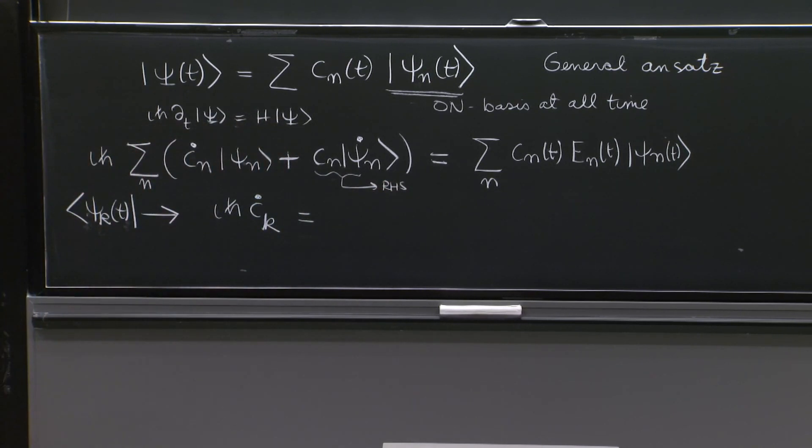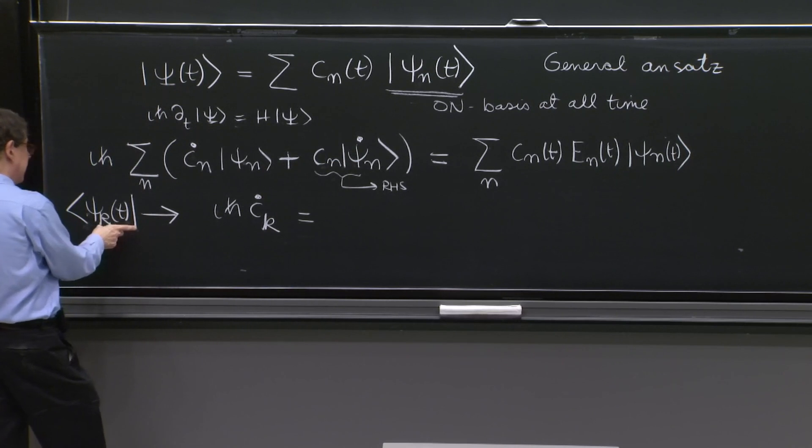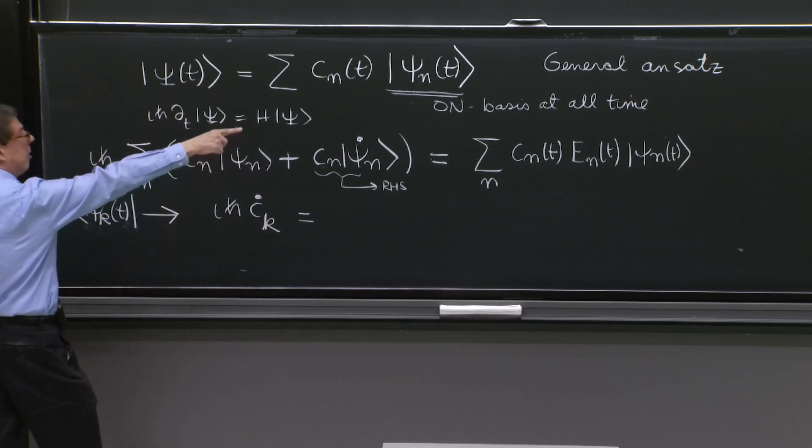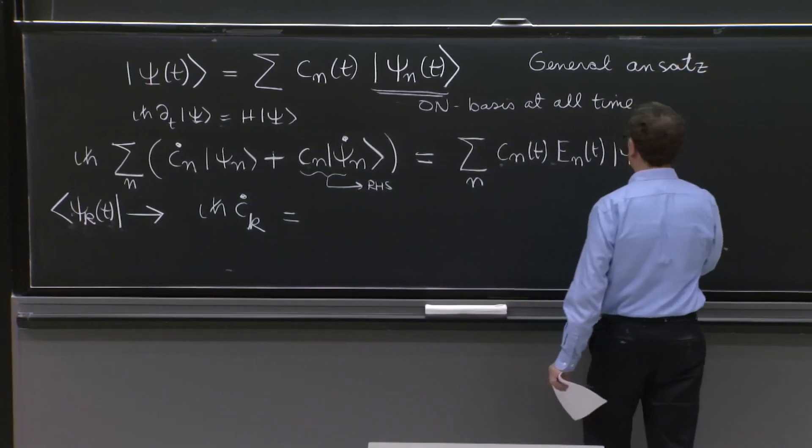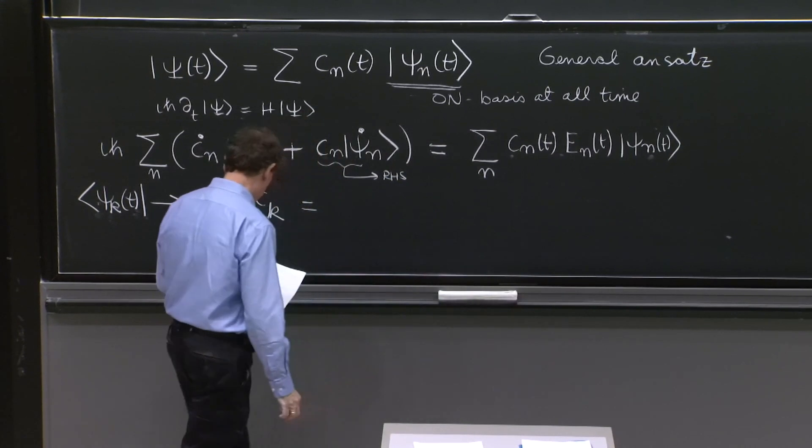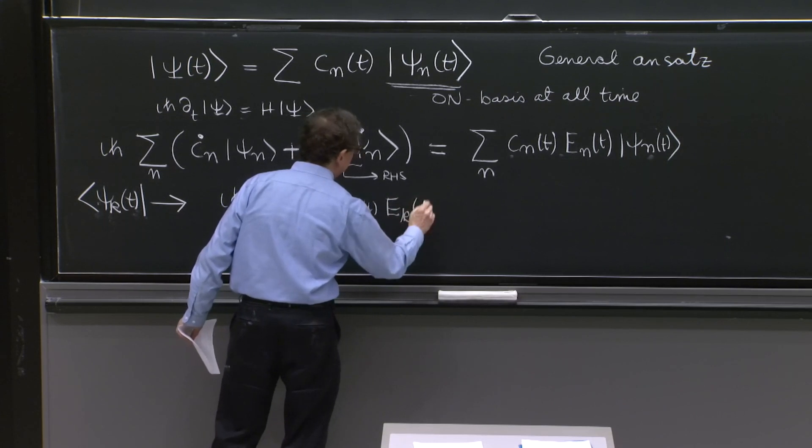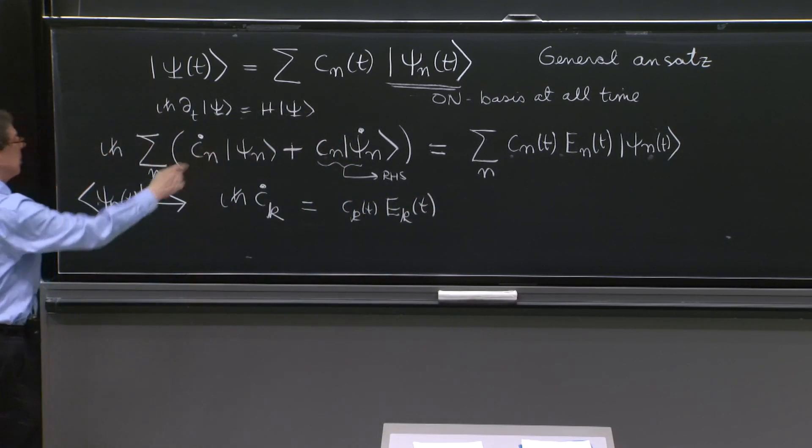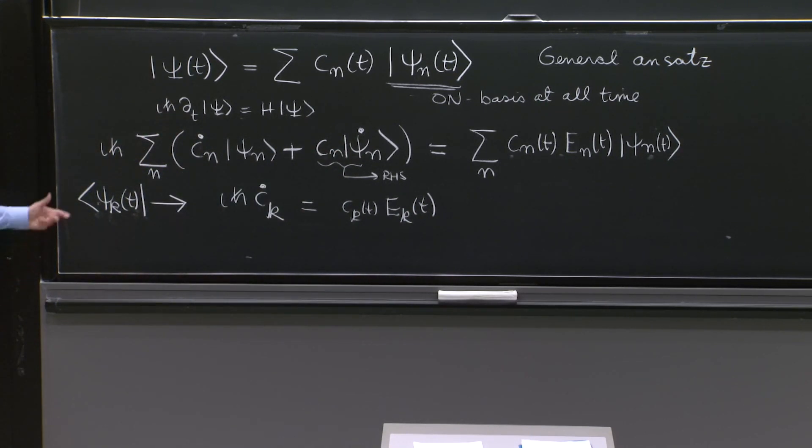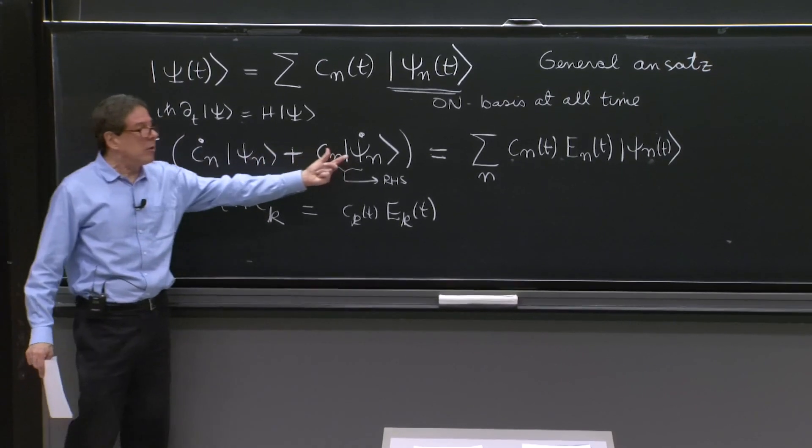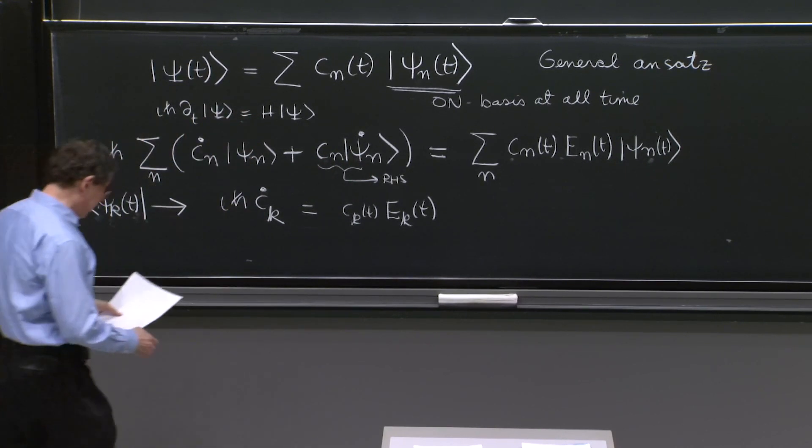And let's put the second term to the right hand side. So from the right hand side, we have the psi k on that thing. That again hits the state and produces a Kronecker delta. However, we don't get rid of the sum because psi k is not orthogonal to psi n dot.